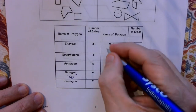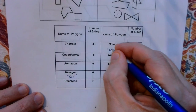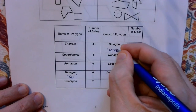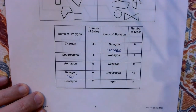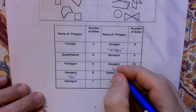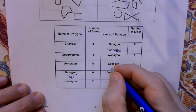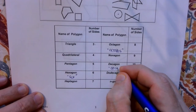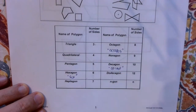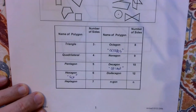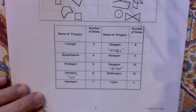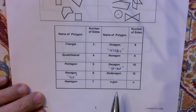For the octagon — think octopus — it has eight sides. If you watch MMA, they call the ring the octagon because it's an eight-sided figure. And decade will help you remember decagon: a decade is 10 years, and a decagon has 10 sides. You won't have to worry about anything more than 10 sides.